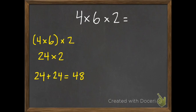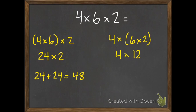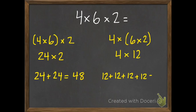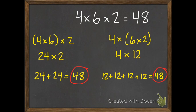I could also group the last two numbers and do them first. So 6 times 2 is 12, and I still have to multiply that by 4. So 4 times 12 — if you know your 4s times tables or your 12s, that's an easy basic fact. That's also 48. So no matter how we grouped these, their products are the same — they all are 48.